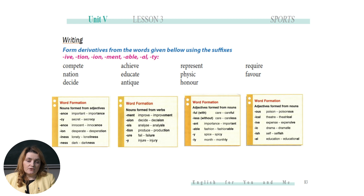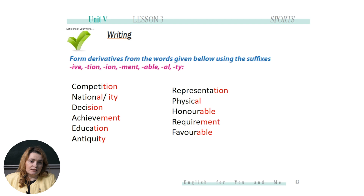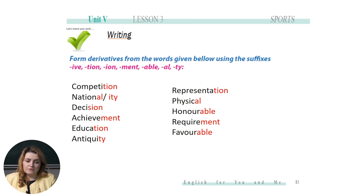Now it's your time to practice. Remember the task? Form derivatives from the words given below using the suffixes. Let's check together. We have: competition, national or nationality, decision, achievement, education, antiquity, representation, physical, honorable, silent, requirement, favorable. If you have the same answers, good job, everyone!